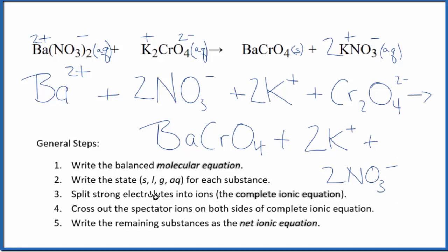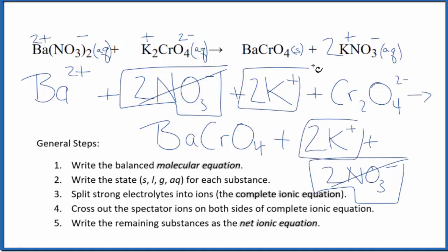So we have the complete ionic equation here, and now we can cross out the spectator ions. They're on both sides. So if I look here in the reactants, I have 2 nitrates here in the reactants, and then in the products, 2 nitrates. Cross those out. They're spectator ions. 2 potassium ions in the reactants and in the products. We get rid of those.